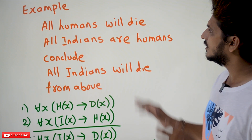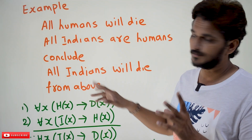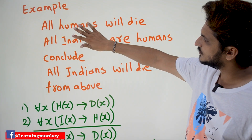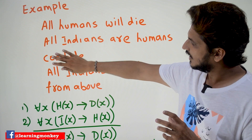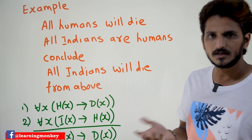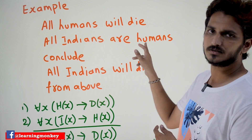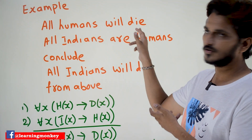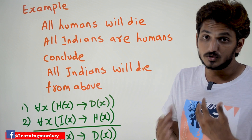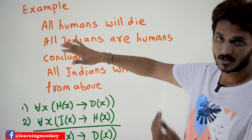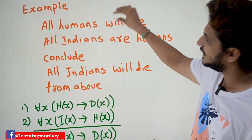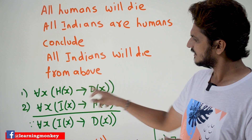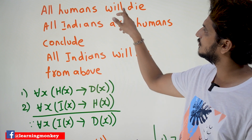Let's take an example: all humans will die. They have provided two statements — all humans will die, and all Indians are humans. From these two statements we need to conclude all Indians will die. All humans will die can be written as: for all x, h(x) implies d(x) — if x is a human, then x is going to die. This is the first statement.